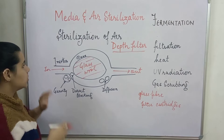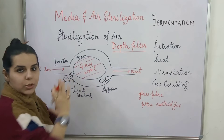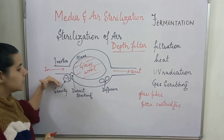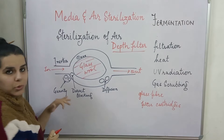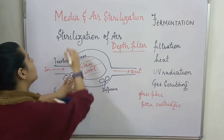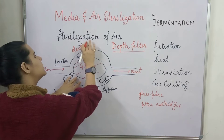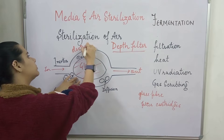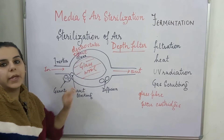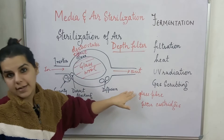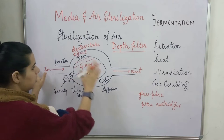Due to inertia, all the particles will try to keep moving in the same direction. There is also gravitational force, because of which some particles tend to settle down. Then there is direct blocking, and in the effect of an electrical field there will be an electrostatic effect. Diffusion and direct blocking are some other factors as well.